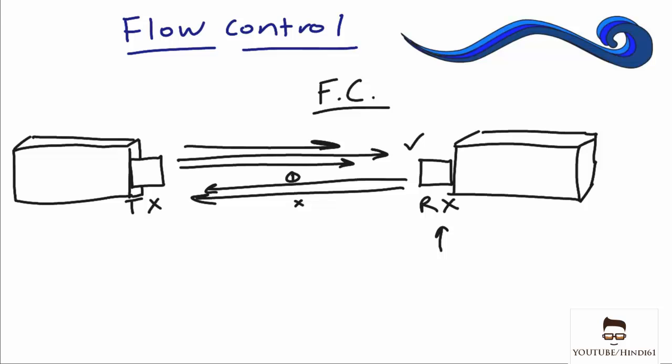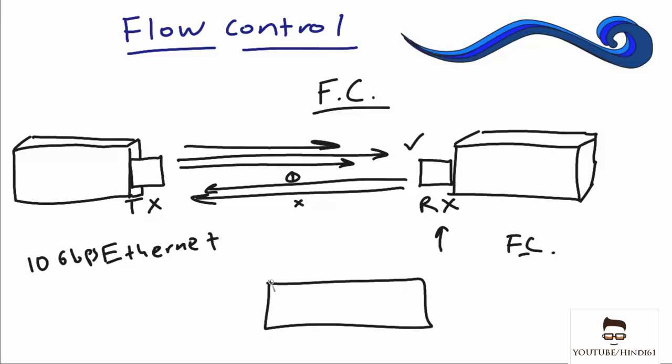One of the cool technologies we can use is unification of LAN and SAN traffic. We're going to use 10 Gigabit per second Ethernet from the local area network and take the Fibre Channel of the SAN and transmit them in the same environment. This is done via Fibre Channel over Ethernet — we take that Fibre Channel traffic and insert it inside of a 10 Gigabit per second Ethernet frame. This unified traffic technology is something we'll elaborate on later in this course.